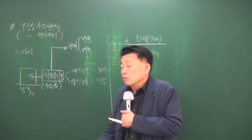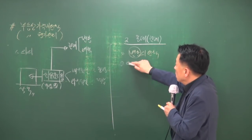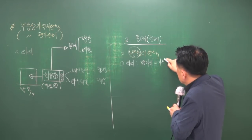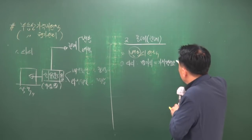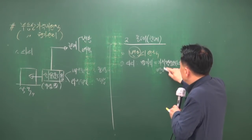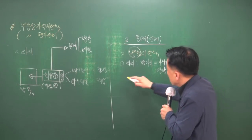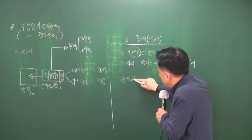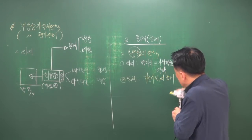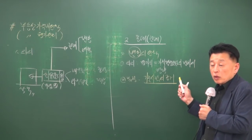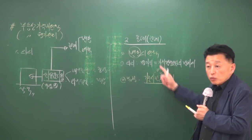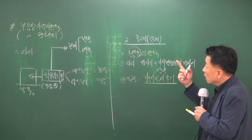부동산의 가치는 가치형성요인의 변화에 영향을 받아 결정되므로, 기준시점에 대한 근거가 됩니다. 노란색으로 표시된 제목이 내용을 설명하므로, 제목과 연관 내용을 잘 기억하시면 됩니다. 나중에 어떤 원칙과 무엇이 연관되는지 묻는 문제가 출제됩니다.